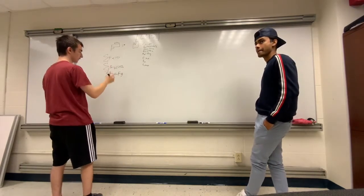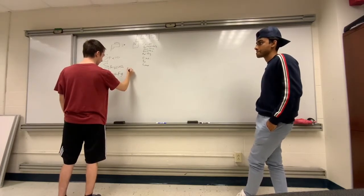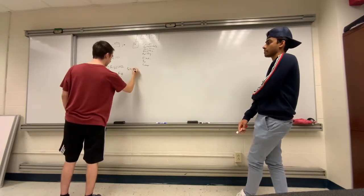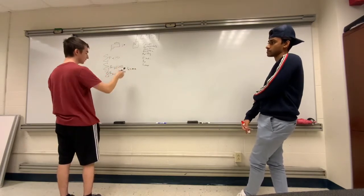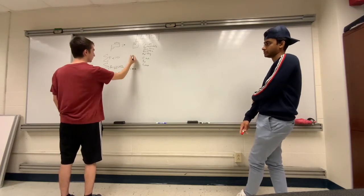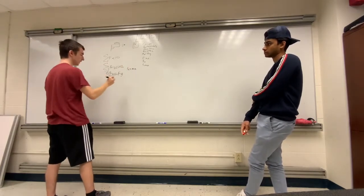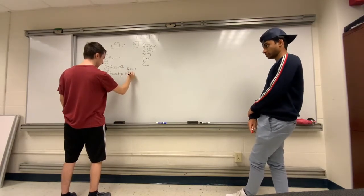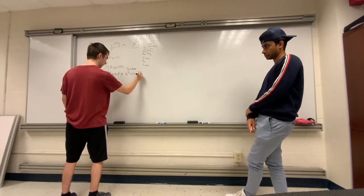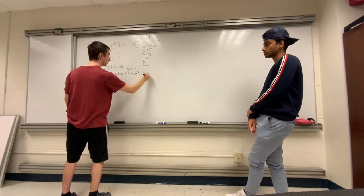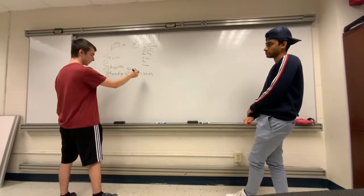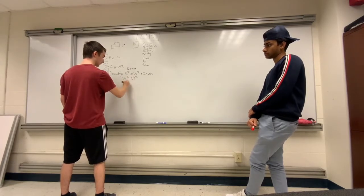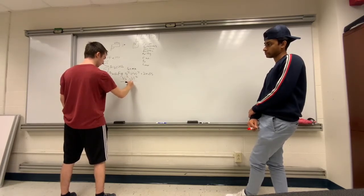To solve for the force of kinetic friction, the formula is force equals mass times acceleration. We know the mass of the bullet; we need to find the acceleration the bullet undergoes when it enters the block. To find that acceleration, we'll use the kinematic formula: final velocity squared equals initial velocity squared plus 2a times the change in position. Solving for a: a equals final velocity squared minus initial velocity squared, divided by 2 times delta s.